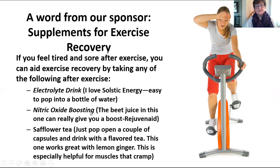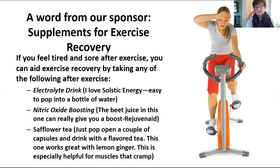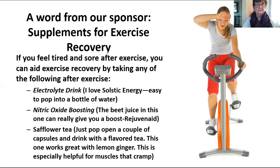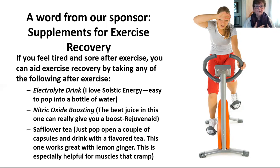Nitric oxide boosting is important — it helps with the oxygen in the blood. There's a beet juice drink called Rejuvenate that my husband and I both love. You can find other beet juice drinks on the market — test to see whether or not they work for you. And safflower tea — if you have muscle cramps, safflower is wonderful. I did a whole video on safflower on my YouTube channel.